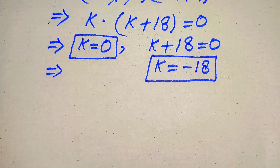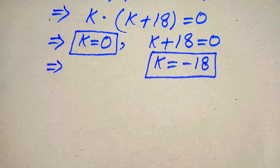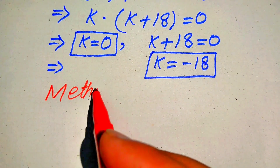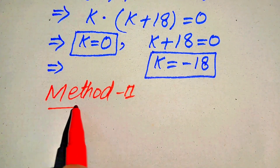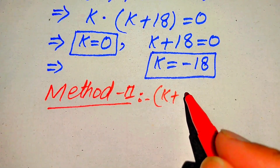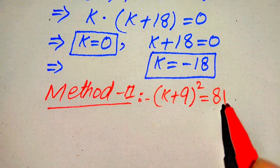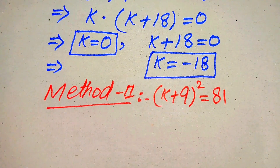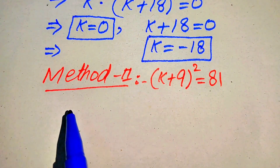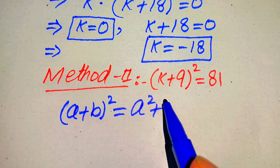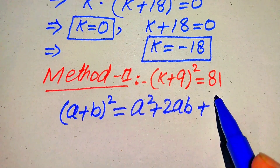These are the two roots from the first method. Now we move forward and solve this problem using the second method. Here we copy down the given question: (k + 9)² = 81. We use the algebraic formula: (a + b)² = a² + 2ab + b².